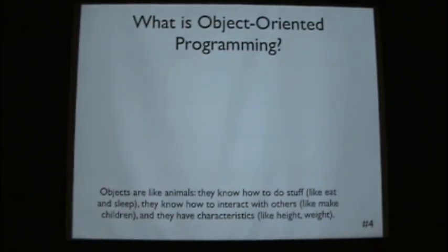So objects are like animals. This is courtesy of Brad Senko. They know how to do stuff like eat and sleep. They can interact with others like make children. And they have characteristics like height, weight, color, etc.